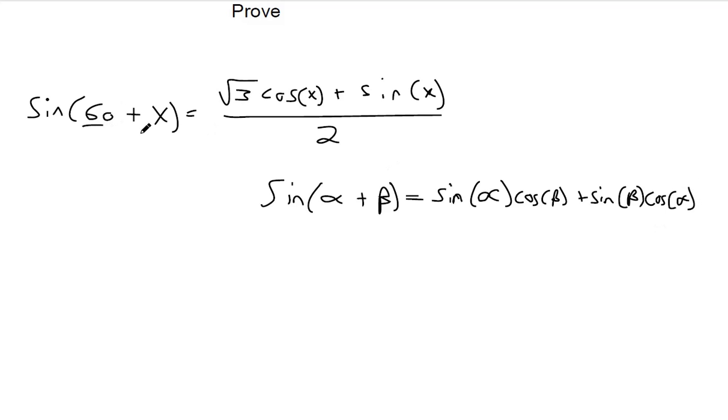We can do that here. Our alpha is 60 and our beta is x. So I'm rewriting that left side. That's sine of 60, cosine of x, plus sine of x, cosine of 60. It might not look like it yet, but we are getting closer because now we don't have two angles inside the argument of the trig function.